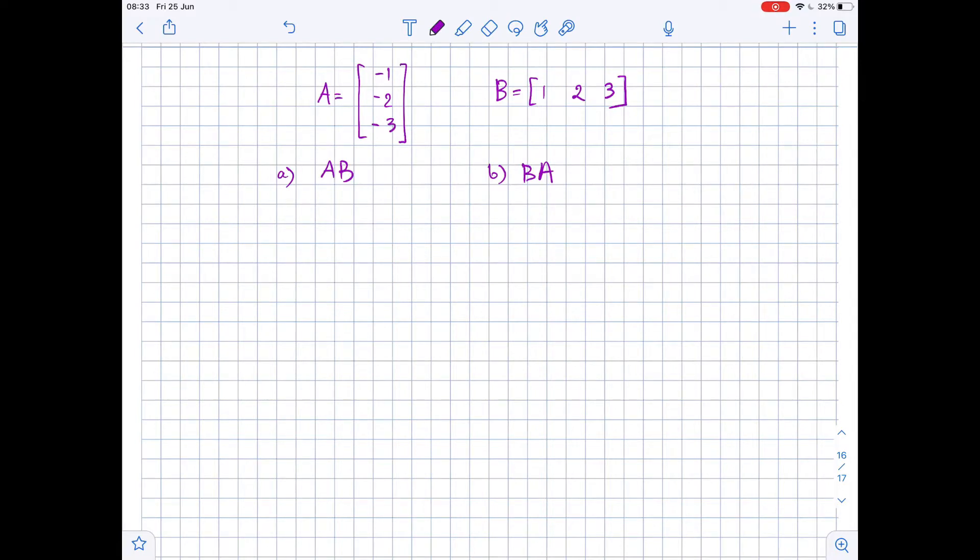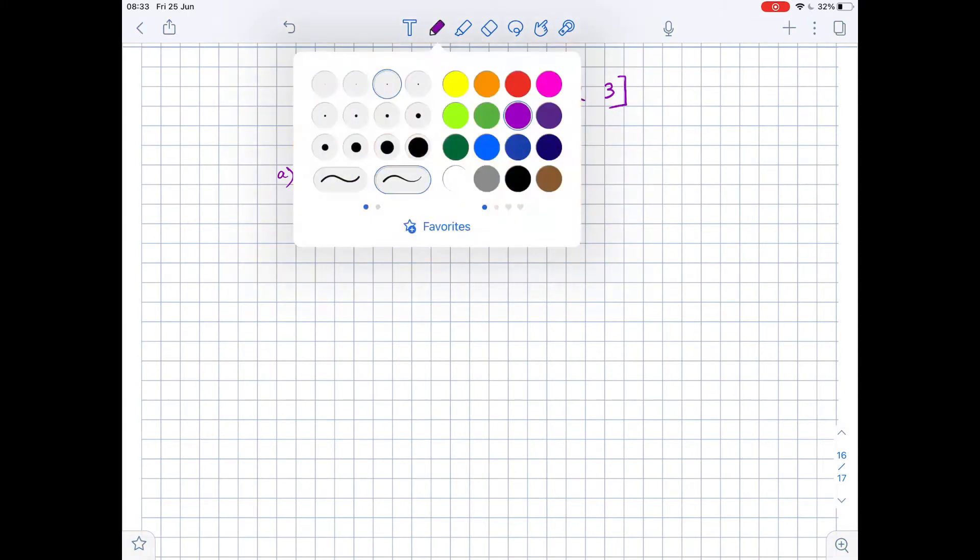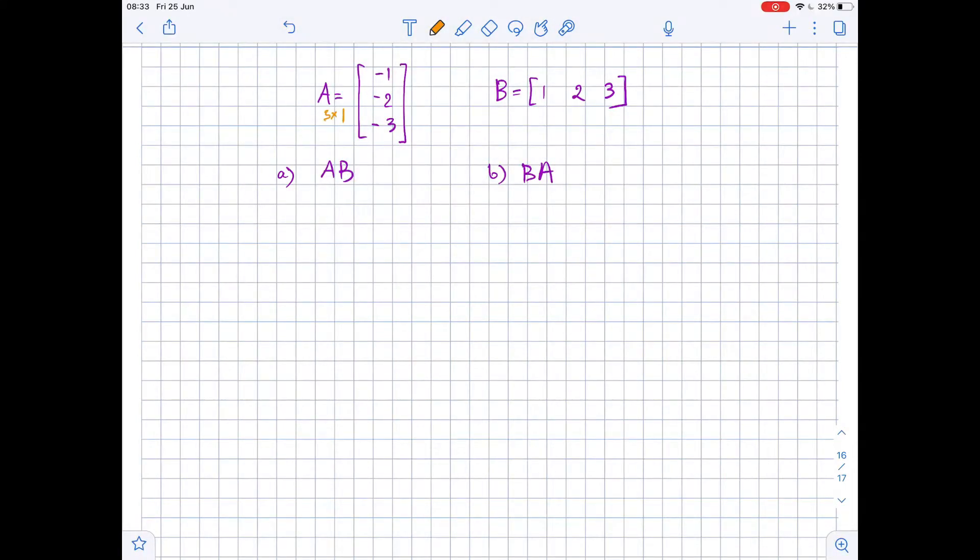So first of all, let's look at the order of our matrices. The order of matrix A is 3 by 1, and the order of matrix B - wait, let me write it down here. So matrix A is a 3 by 1 matrix, and matrix B is a 1 by 3 matrix.